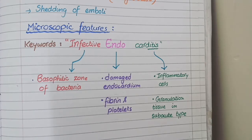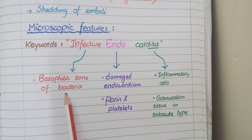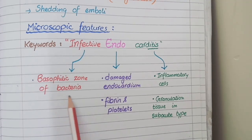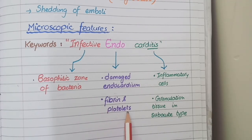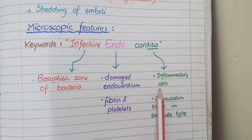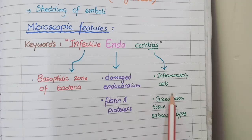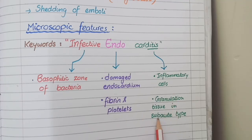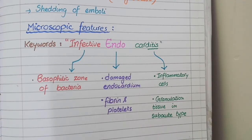So overall, on microscopic view of infective endocarditis, you will see a basophilic homogeneous zone, damaged endocardium or endothelium with platelets and fibrin, inflammatory cells, and granulation tissue in the sub-acute type.